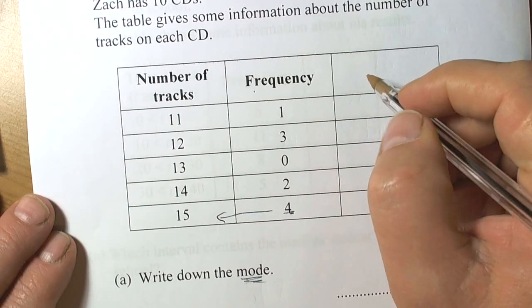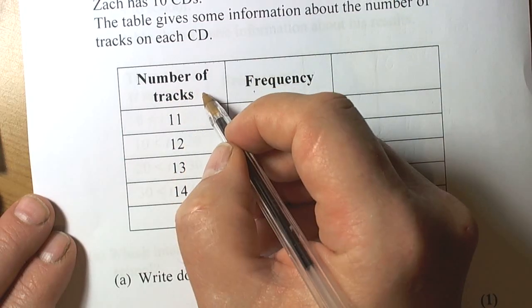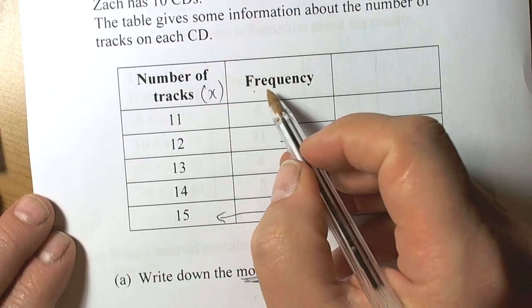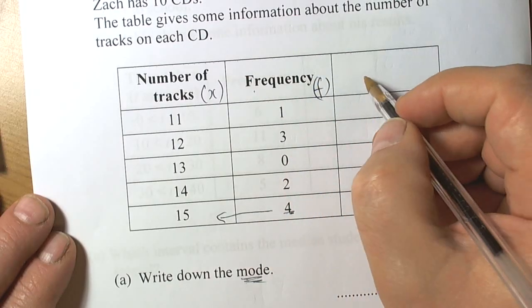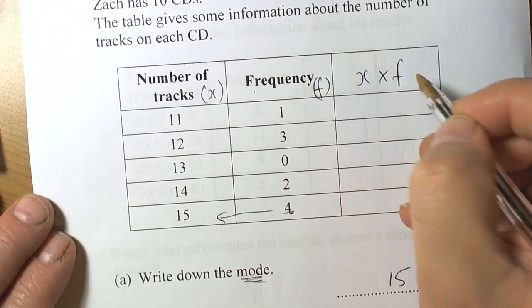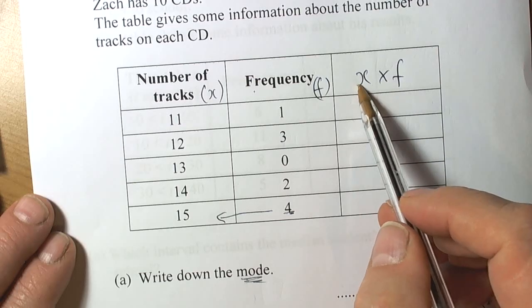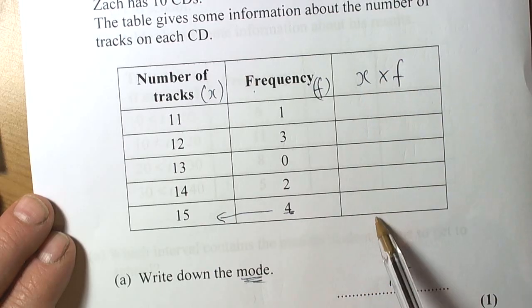The number of tracks is our data, so we can call that X. Frequency is our number of items, so we call that F. In this final column we do the data times the frequency, because then we can get the total number of tracks in the whole table.